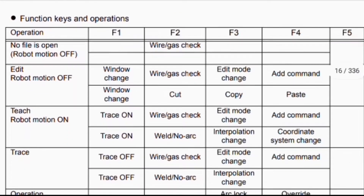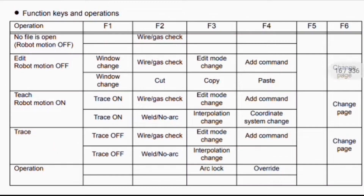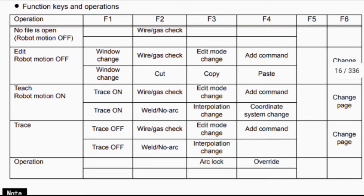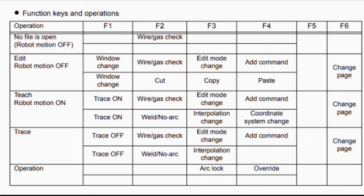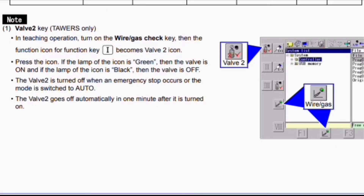Here we discuss the function keys and operation table. Operations vary by mode: when no file is open, F2 is wire gap check, F3 is edit, and F6 changes the page. In robot motion mode, F2 is wire gap check, F3 is edit mode change or copy, F4 adds a command, and F5 pastes. In trace mode, F1 is trace on, F2 is wire gap check, F3 is edit mode or interpolation change, F4 adds a command or changes the coordinate system, and F6 changes the page. F4 also controls override.